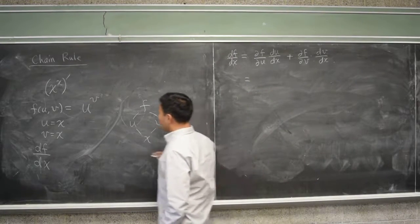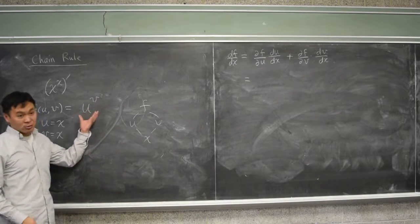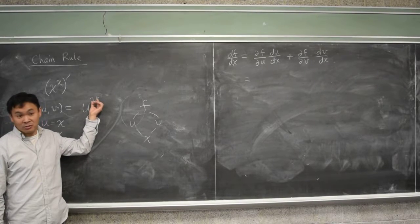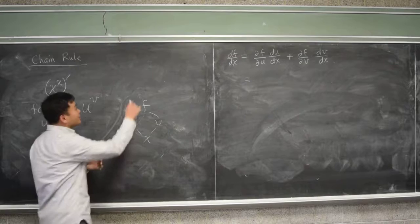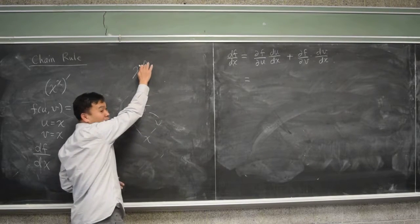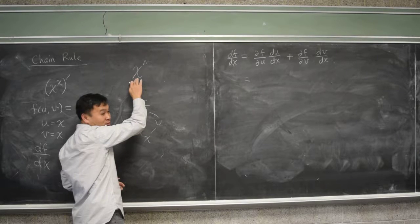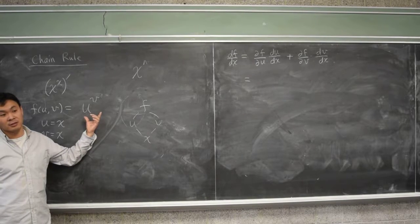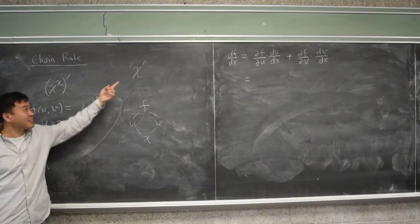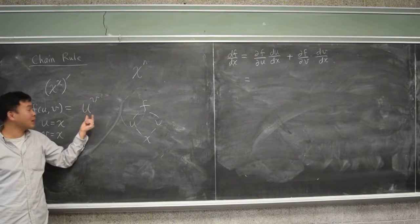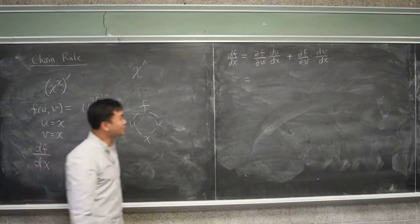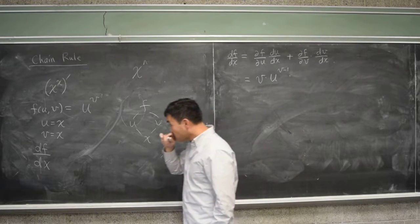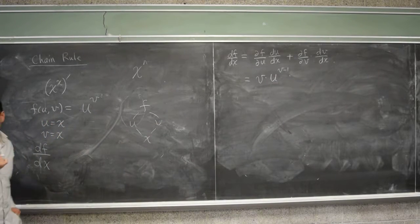Now what's the derivative of u to the v when you differentiate by u? Let's think about this carefully. That means you're considering v as a constant, right? So that's like differentiating x to the n, where the exponent is constant and this is the function that's changed. So what's the derivative of u to the v if you differentiate by u? v comes down, because it's like the n, times u to the v minus 1. You get v times u to the v minus 1 times, what's the derivative of u by x? 1.